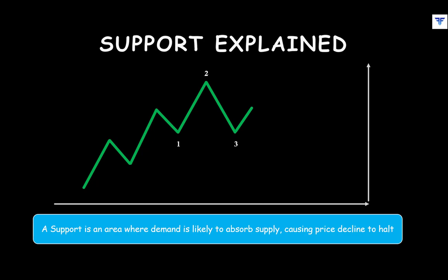Now, if you closely observe, you will notice that point 3 terminated at essentially the same level as point 1 before starting the upward move. Here, point 1 acted as a support to the price at point 3. You can think of support as a former level that acts as a floor to the price in the future.